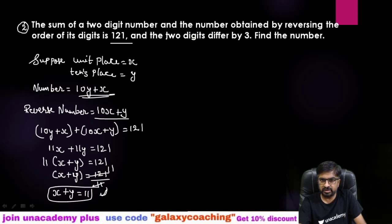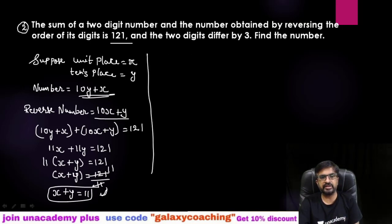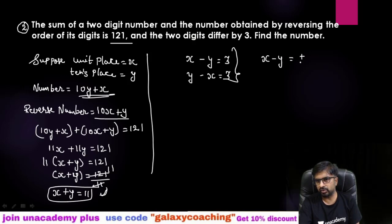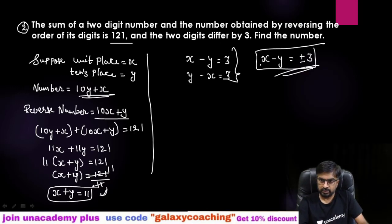Now the second equation, the two digits differ by three. Here comes the big problem. Here they had not told us which digit is greater, unit place digit is greater or tens place digit is greater. They said the difference is 3. So x minus y can also equal 3, or y minus x can also equal 3. Or you can write down this as x minus y as plus or minus 3. We don't know which one is greater, x is greater or y. So here two different answers will come. That also I will tell you how.